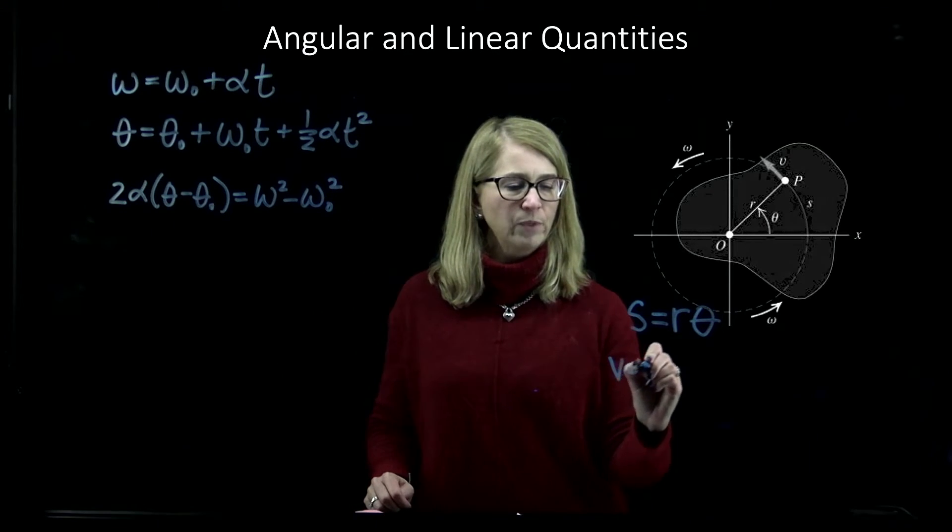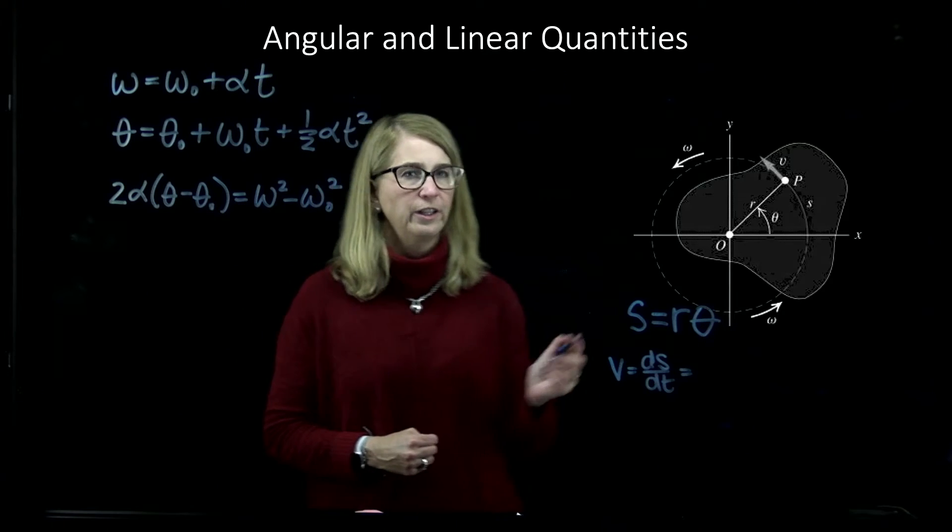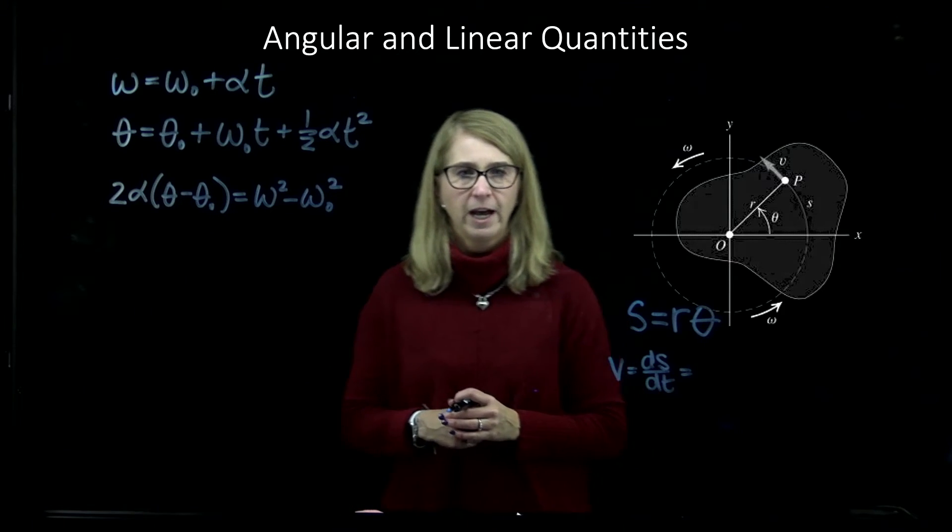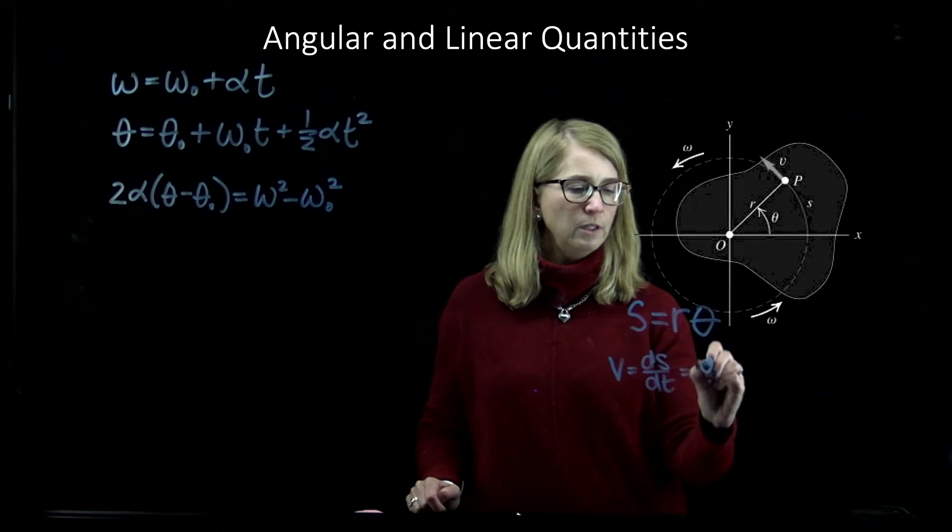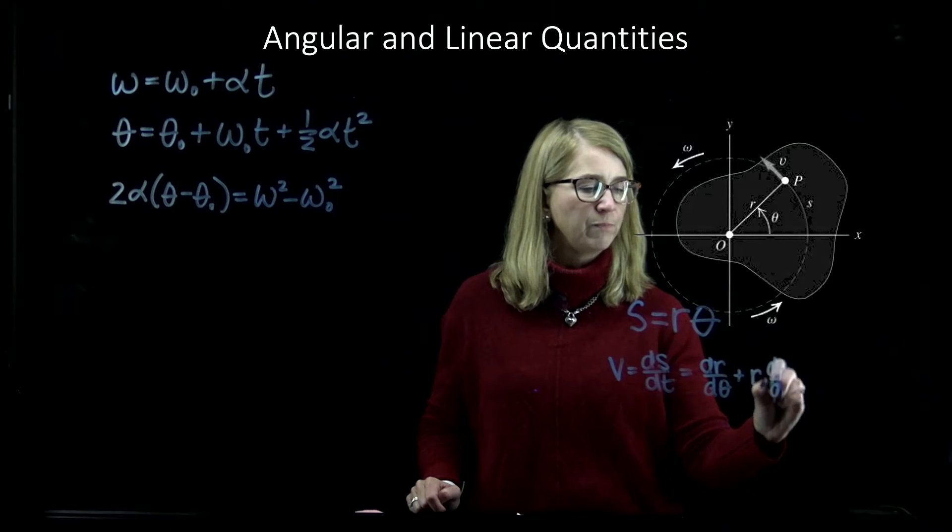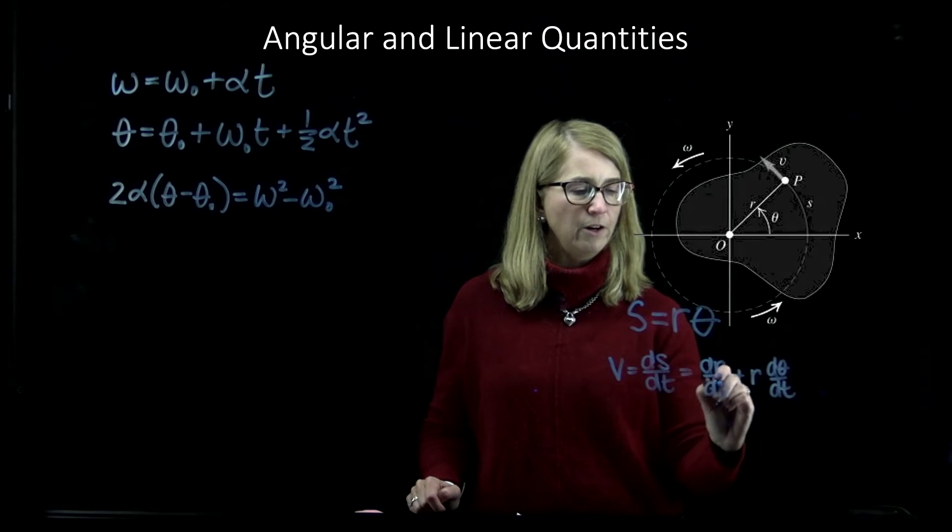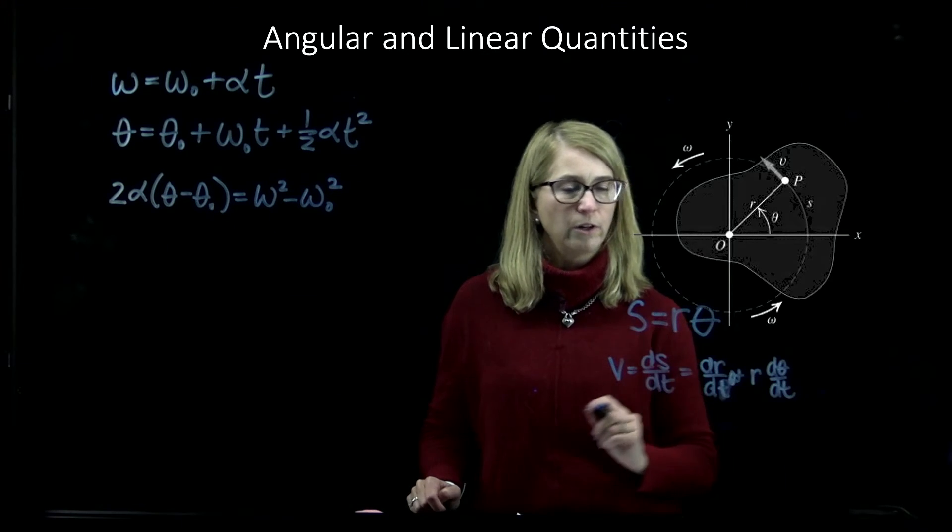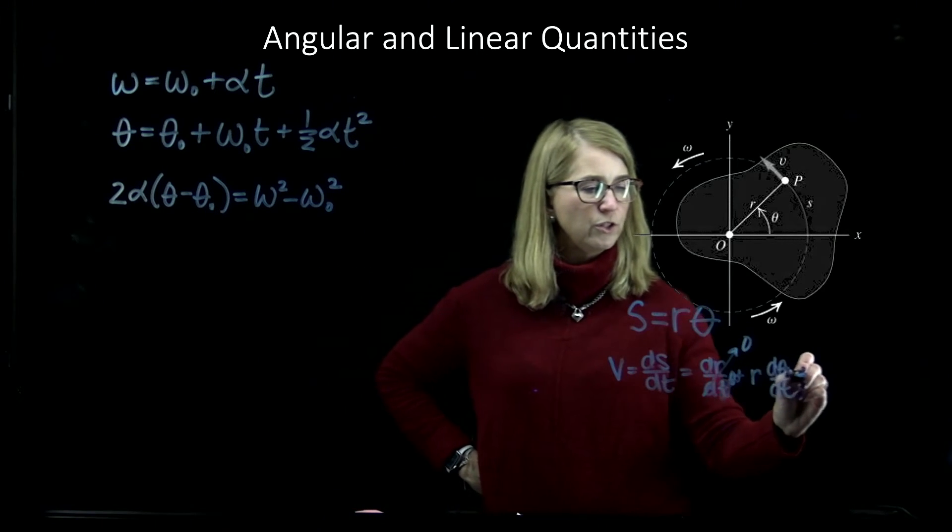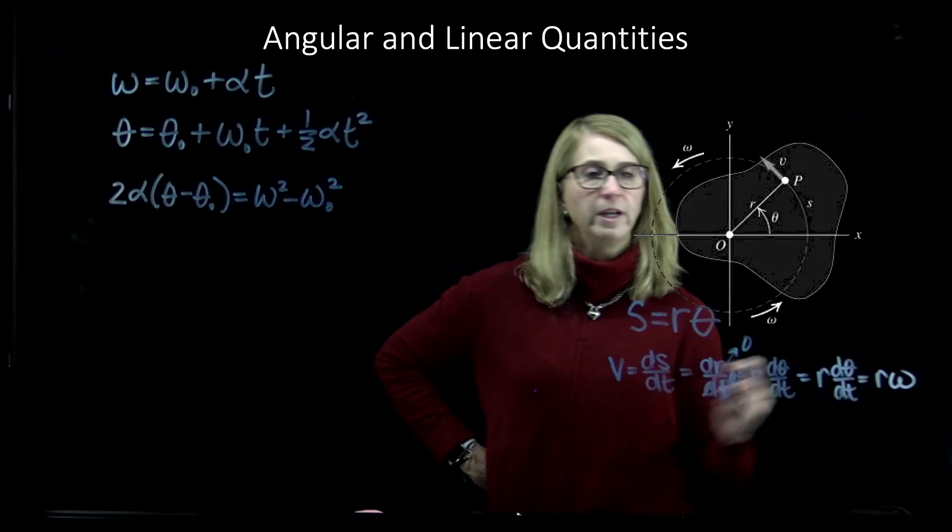Now, if I look at velocity, which is ds dt, how fast is this thing going linearly, the velocity indicated here of point P, of course it's tangent to the circular path. We would do dr dt times theta plus r times dtheta dt, but the thing is, dr dt times theta, this is zero because the radius is constant. So, this is just equal to r dtheta dt, which is just r times omega.